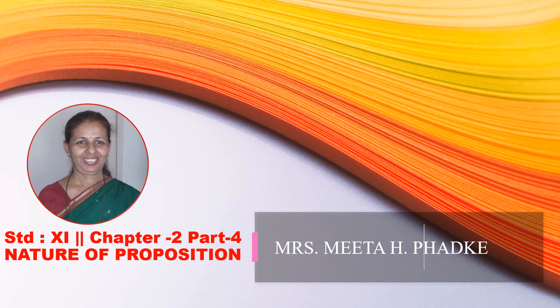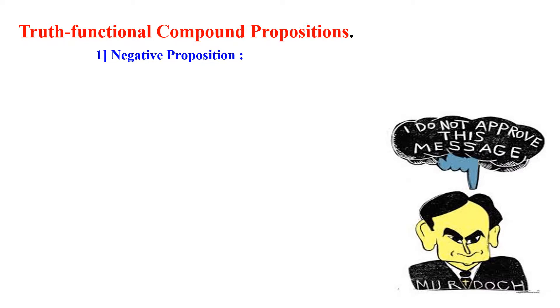Good afternoon. In this session, we will do part 4 of chapter 2, Nature of Proposition. In this chapter, we will be studying different types of truth functional compound propositions. We already know what a truth functional compound proposition is and we know the five types. We will be studying the first in much detail: the negative proposition.